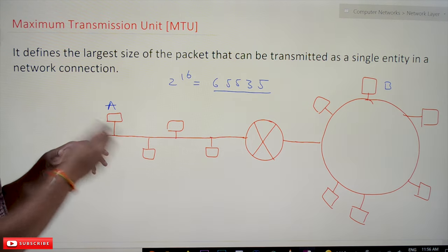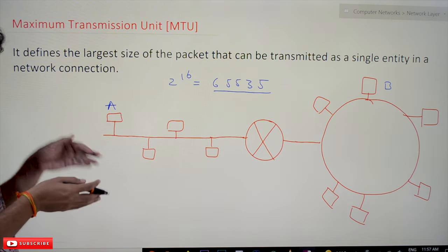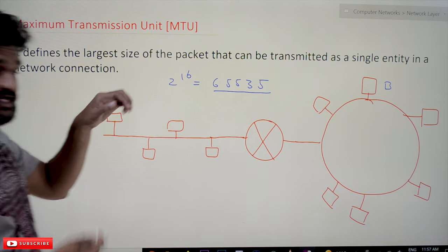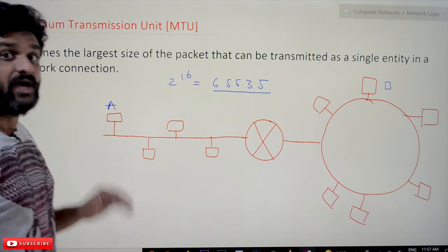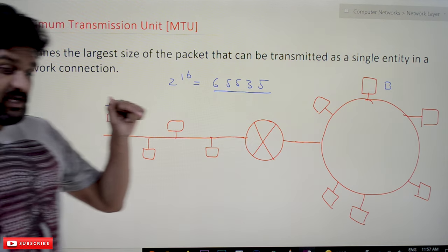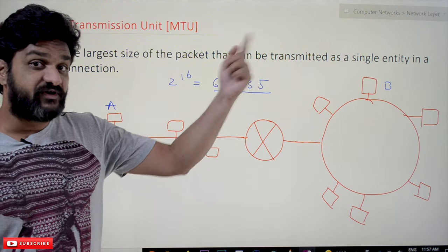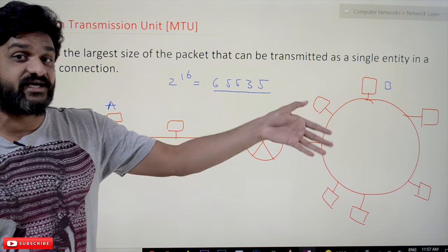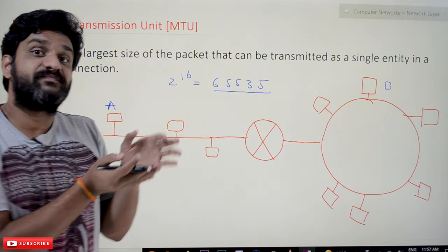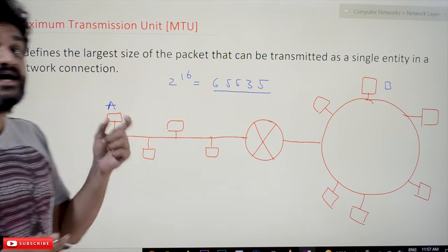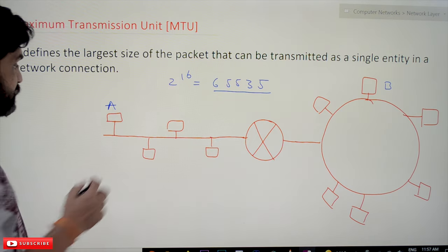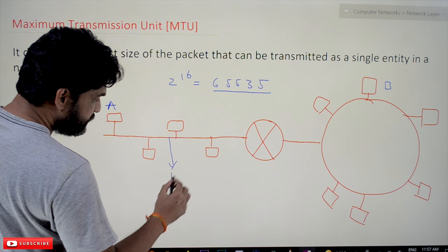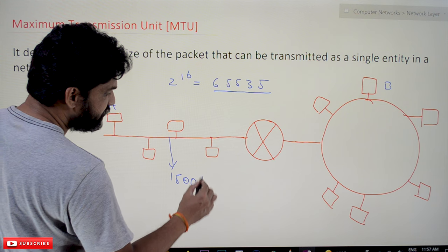That is the capacity of the data that can be transmitted at the network layer. But at the data link layer, when we discussed Ethernet, we said that Ethernet has a maximum capacity of 1500 bytes. So Ethernet, as a shared medium link, has a capacity of 1500 bytes.